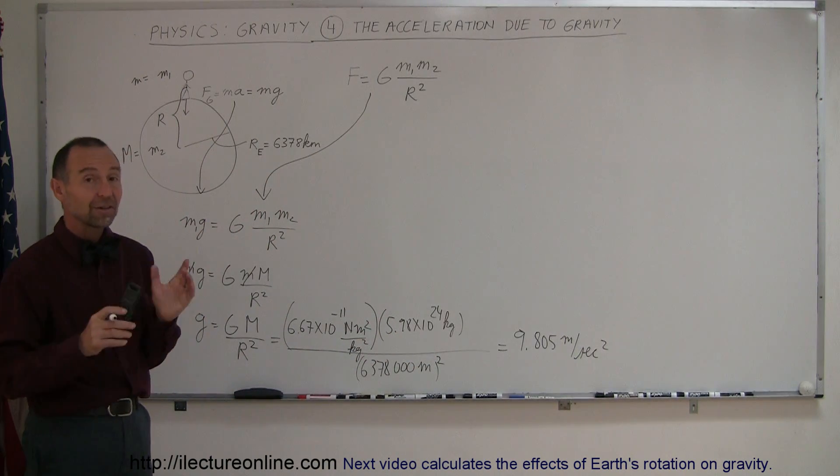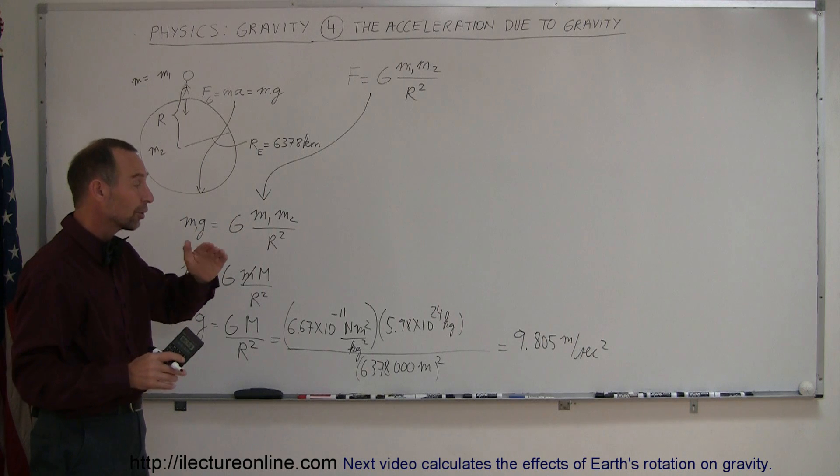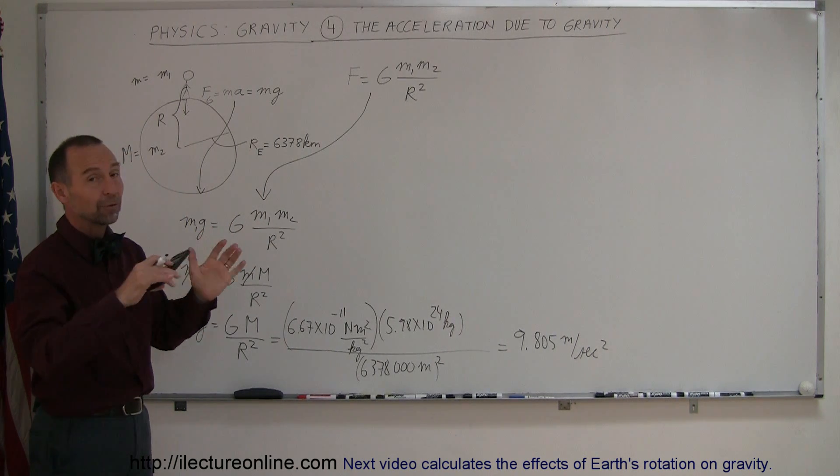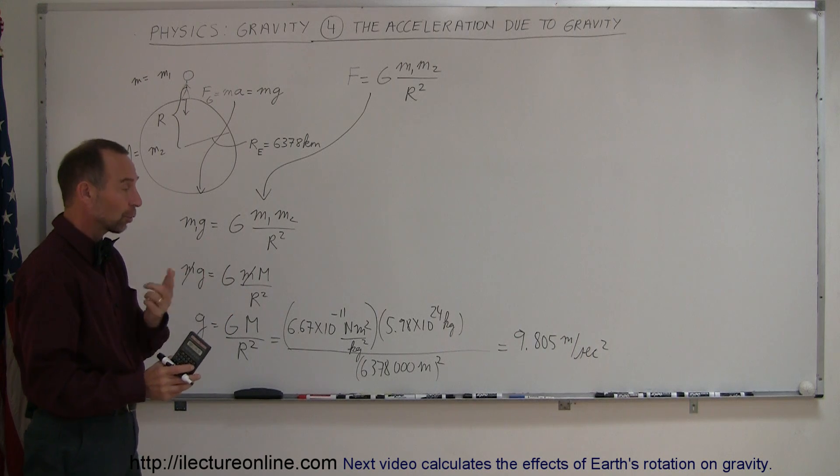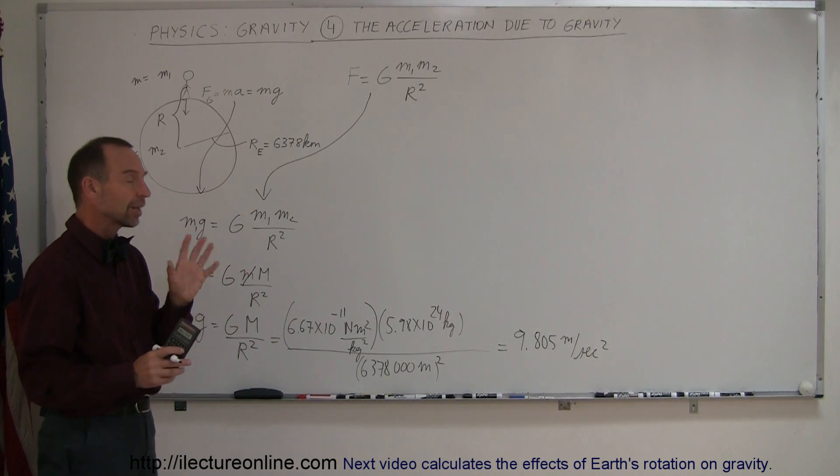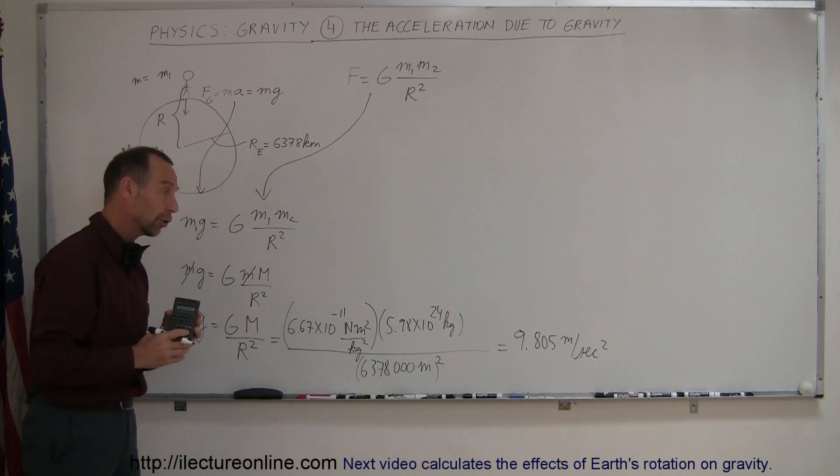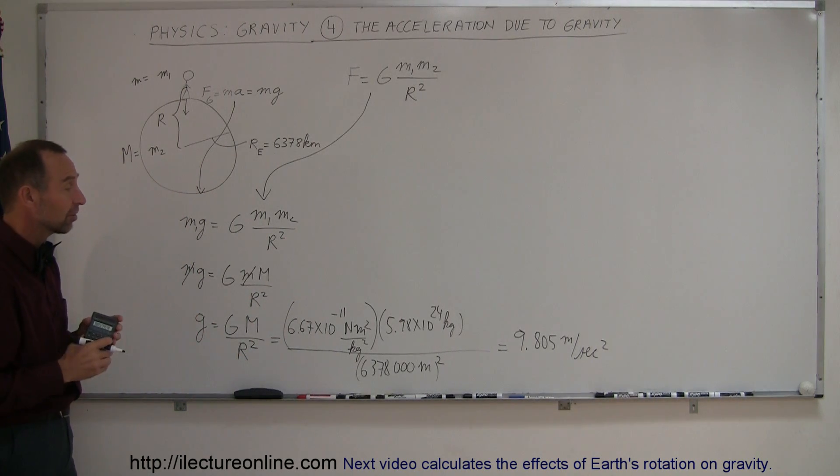Now, of course, it's not an exact constant everywhere on the earth. If you go to different locations on the earth, that will be slightly different for various reasons. The earth is not a perfect sphere, and also because of its rotational motion, there are some effects there that we will talk about later. But at least you can see here that it is a very close number to what we normally expect to see, 9.80, 9.81, depending upon where you are on the surface of the earth. And that's how we figure out the acceleration due to gravity. Thank you.